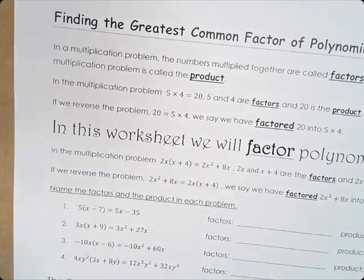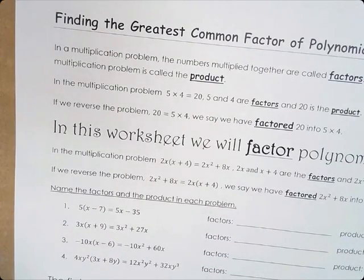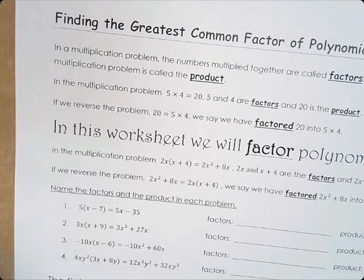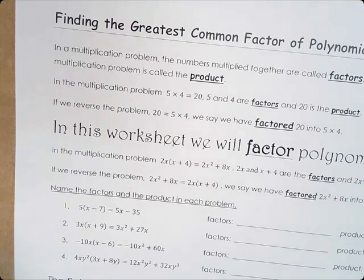In math, we're always learning how to do something and then learning how to undo it — like adding, and then to undo addition you would subtract. Multiply — to undo multiply, you would divide. With fractions, you would do the reciprocal. So you're always finding out how to do the opposite, basically undoing something.